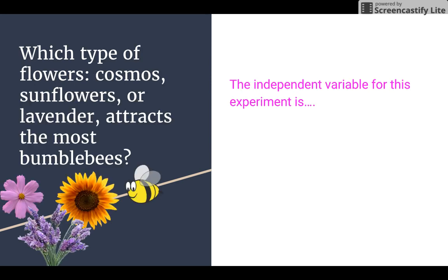So when we're looking at the independent variable for that experiment, we have to look for what's different in that particular example. And it says type of flowers, cosmos, sunflowers, or lavender. And so right there you can see what's different, cosmos, sunflowers, or lavender.